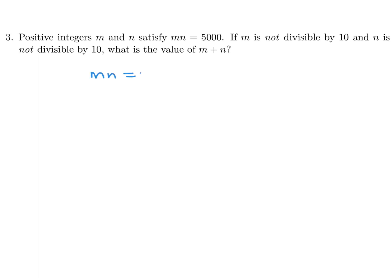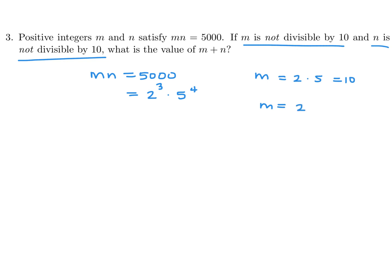m times n is 5,000. So let's first break up 5,000 into its prime factors — it's 2 to the power of 3 times 5 to the power of 4. Now, m is not divisible by 10, and n is also not divisible by 10. So that means m cannot have any combination of 2 and 5, because as soon as you put in a 2 and a 5, that equals 10, and that would make m divisible by 10. So that means m has to have either all 2s or all 5s. So I'll make m the all 2s and n the all 5s — that's the only way to do this.